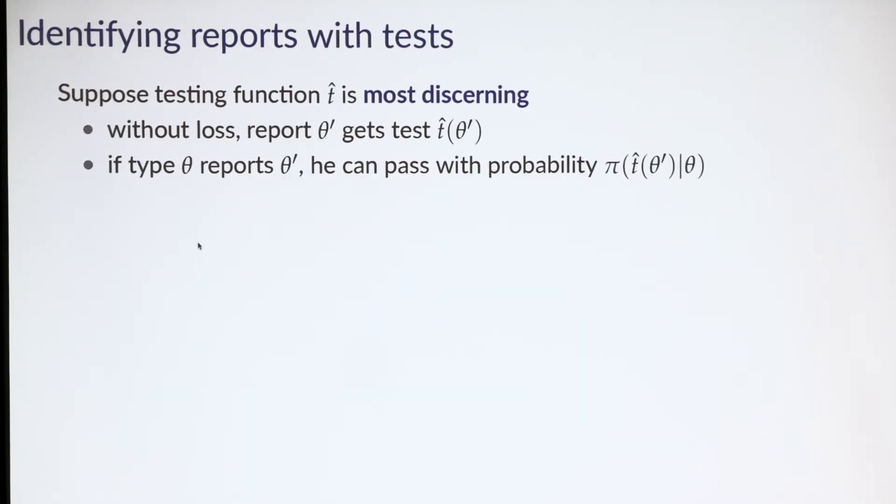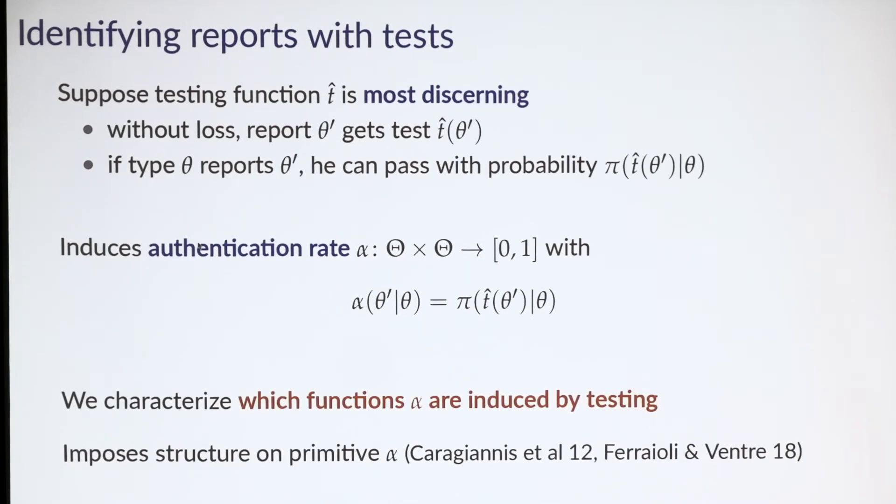If we do this, we can now induce a simpler object. Suppose testing function t-hat is most discerning. This means without loss, we can assume report theta prime results in test t-hat of theta prime. Therefore, if type theta tries to mimic type theta prime, we know automatically the passage probability. From this testing environment, we can define the induced authentication rate, which specifies the probability that type theta will pass if he imitates type theta prime for every pair of types. Crucially, in the paper, we characterize which functions alpha can be induced this way. Not every function alpha can be induced by a most discerning testing rule.